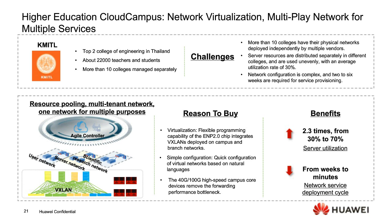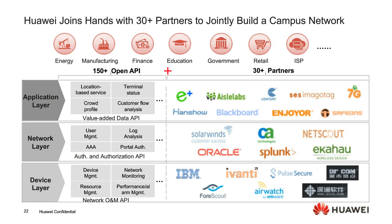We've been building campus networks not only with Huawei themselves but partnered with vertical industry partners. We're focused on manufacturing, education, government, retail, and the energy industry. We have different layers of openness to enable all those partners to leverage the campus network, IoT, and Wi-Fi technology to more smartly manage their things and businesses.